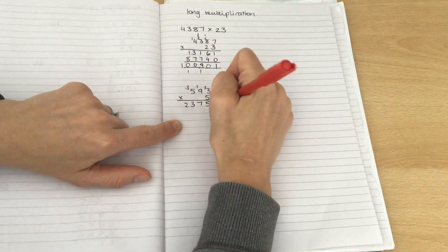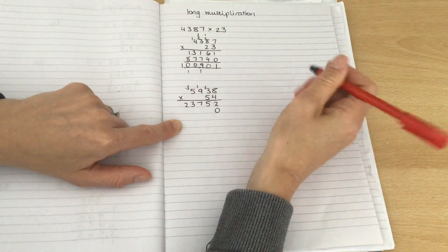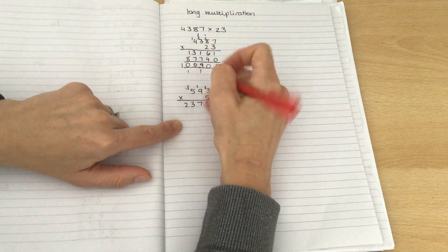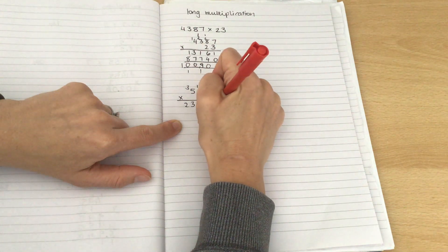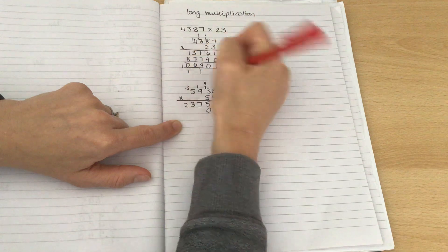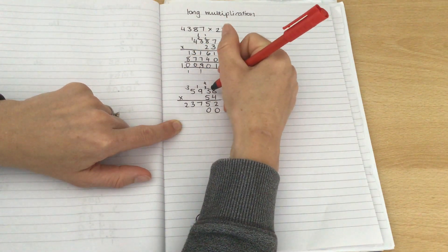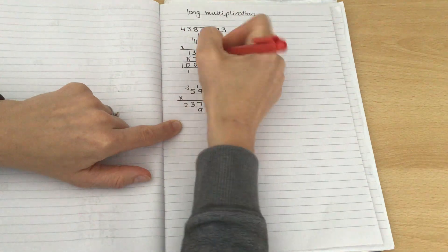As I'm now multiplying by 50, I'm putting down a placeholder. 5 times 4. 5 times 8 is 40. 0 goes down. New carrying at the top. 5 times 3 is 15. Add the 4 is 19.